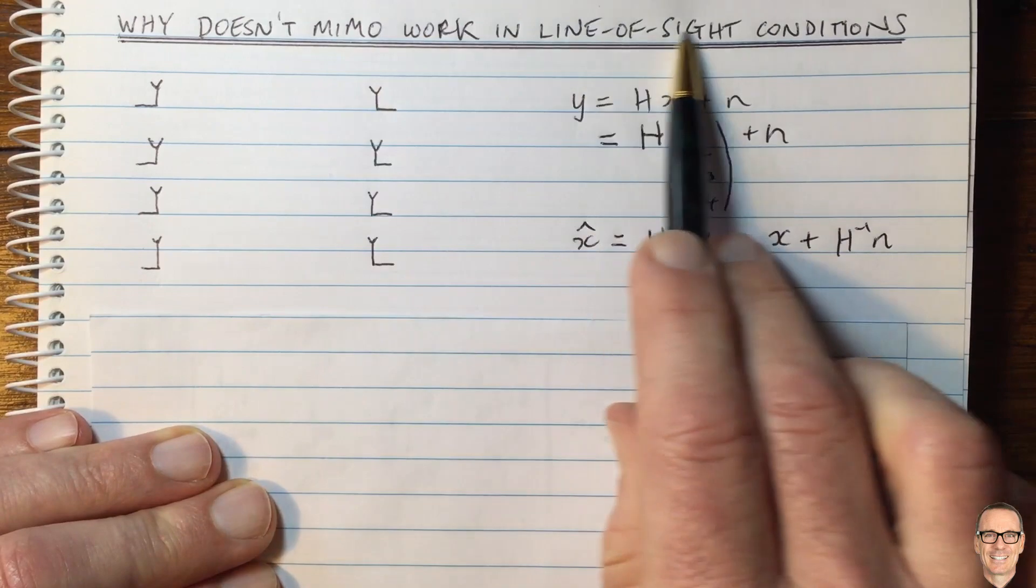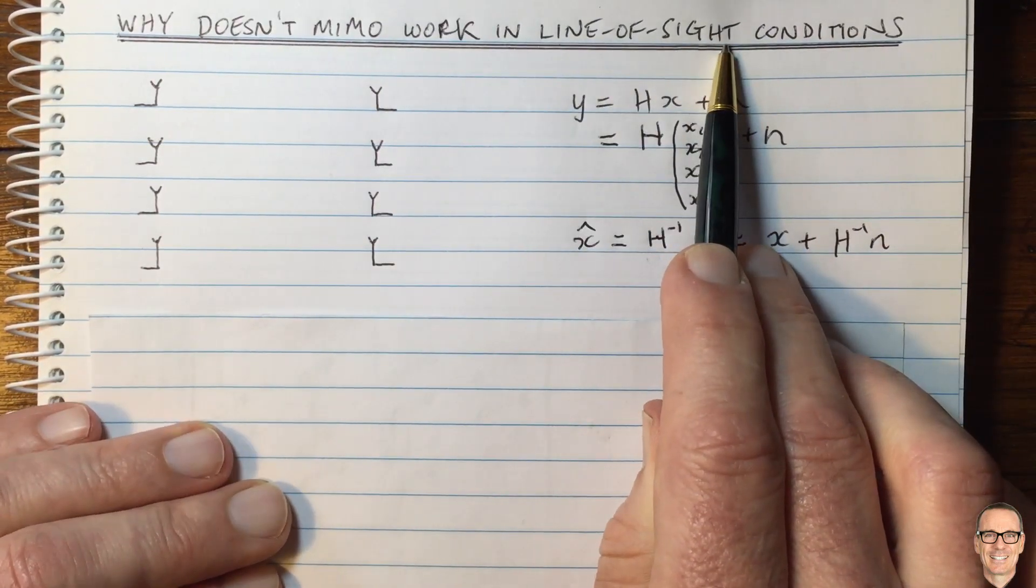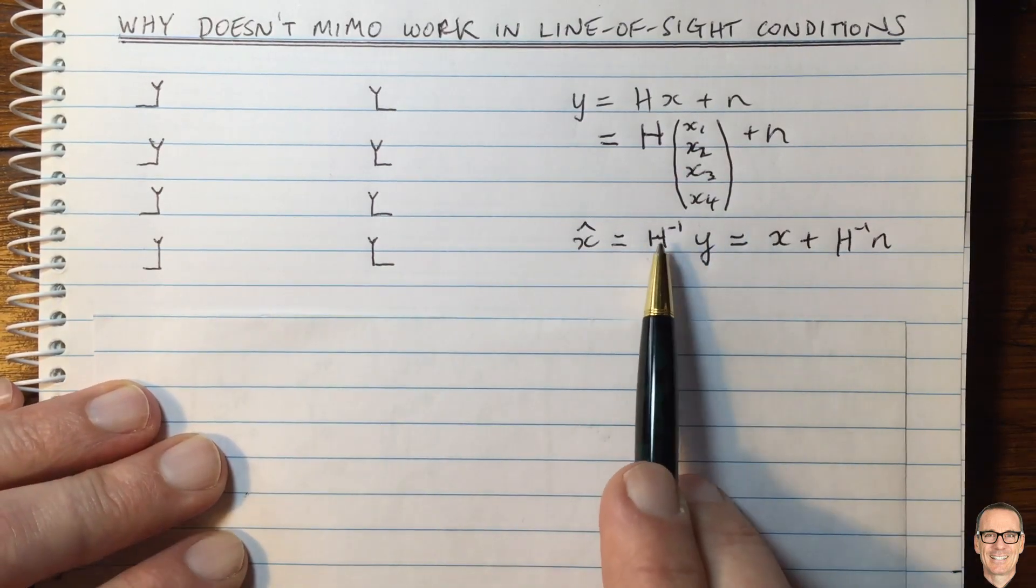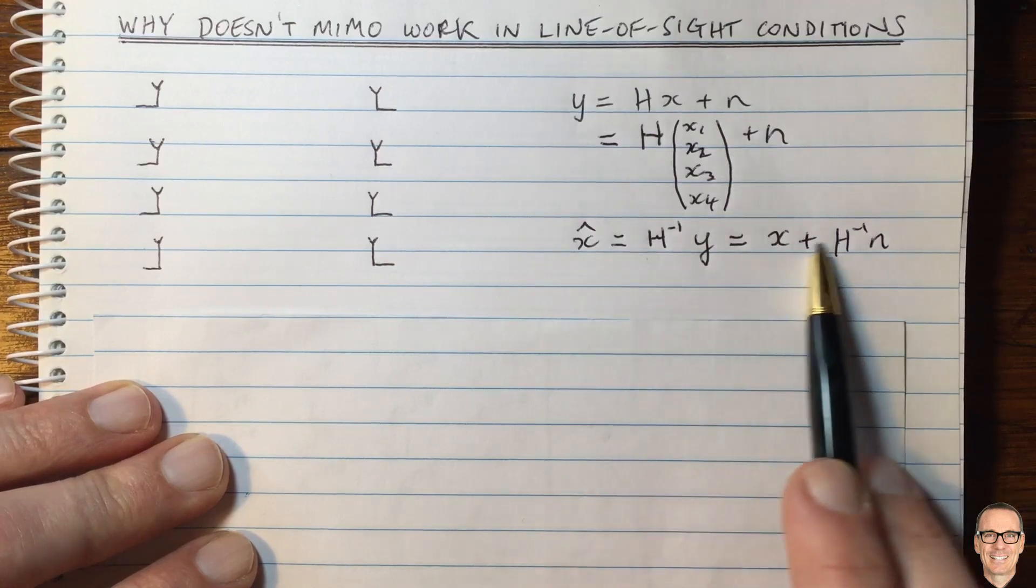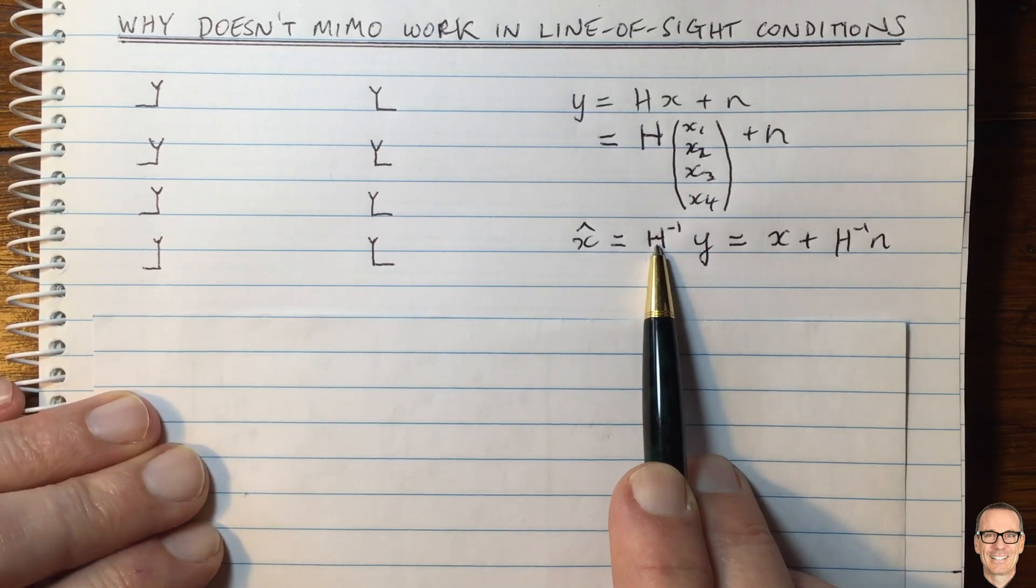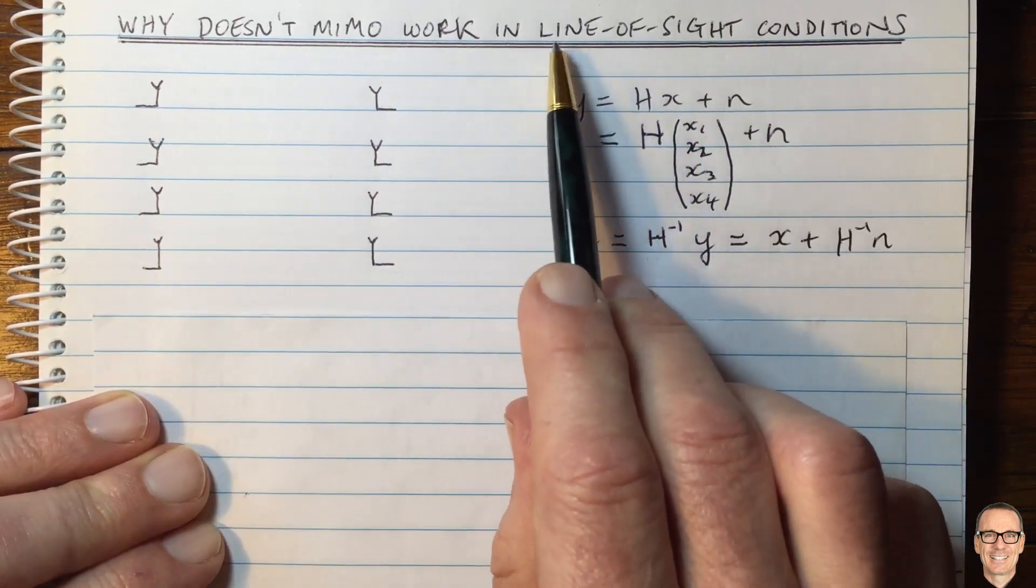Now, why can't you do this in line of sight? This is a common understanding. Let's look at that in a bit more detail. You can only do this if you can invert the matrix H. That's the critical thing. Why can't you invert the matrix when you've got line of sight?